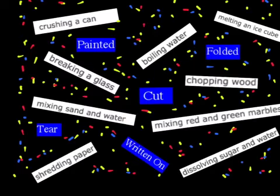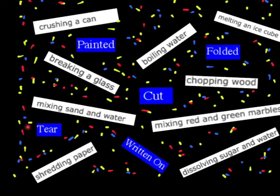Here are many examples of physical change. You could crush a can, but it'd still be a can. Break a glass, you'd still have glass. Mixing sand and water wouldn't change the substances — you're just mixing them together. You could shred some paper, but you'd still have that paper there. You could tear something, paint something, cut something, write on something, fold something.